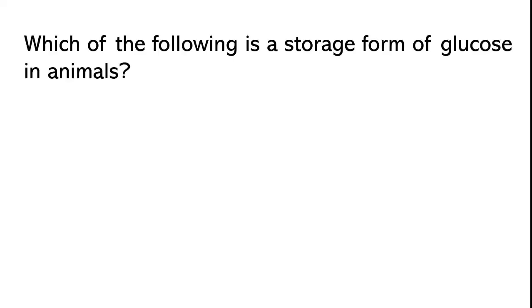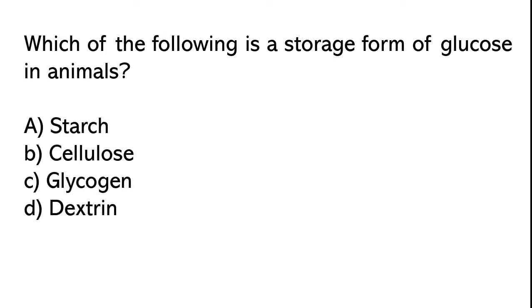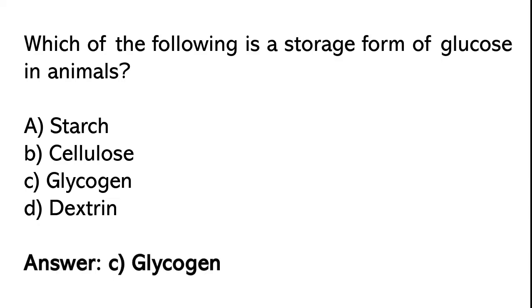Which of the following is a storage form of glucose in animals? Starch, cellulose, glycogen, dextrin. The correct answer is option C: Glycogen.